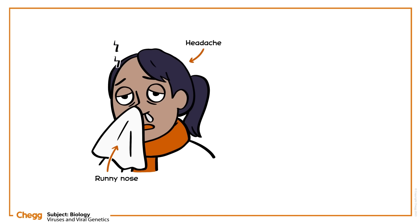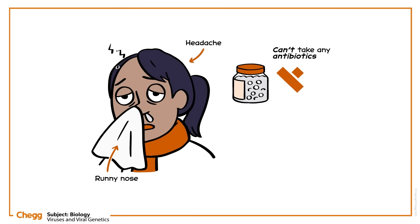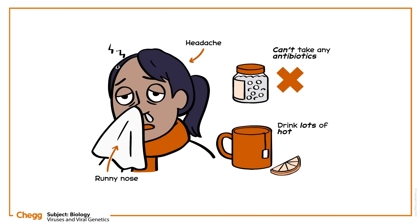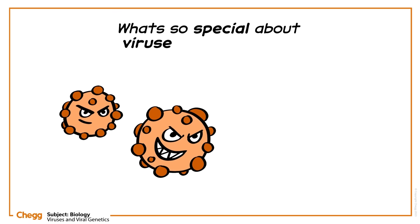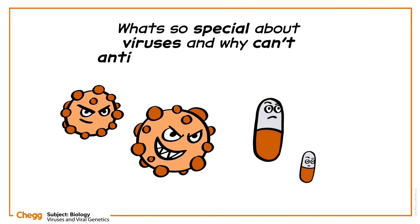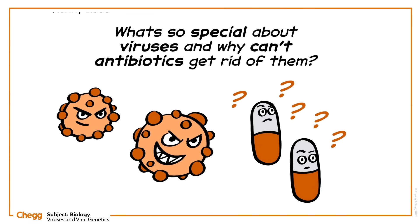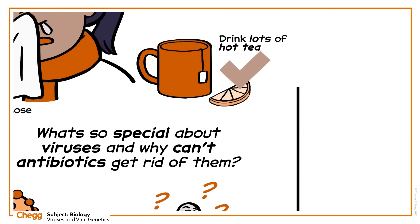We're all affected by the cold and flu every year, and what's worse, we can't take any antibiotics to beat them. With many illnesses, we can take some medicine and get on with our day, but with cold and flu, we simply have to drink tea and wait, while feeling very sorry for ourselves. So what's special about viruses, and why can't antibiotics get rid of them? Let's learn about virus characteristics, their structure, and genome.